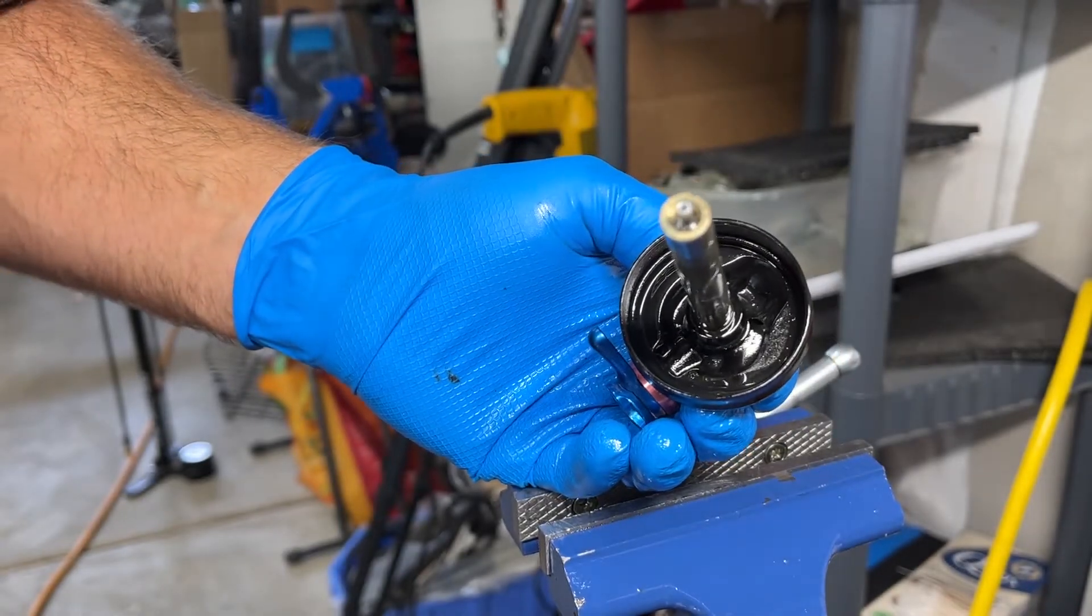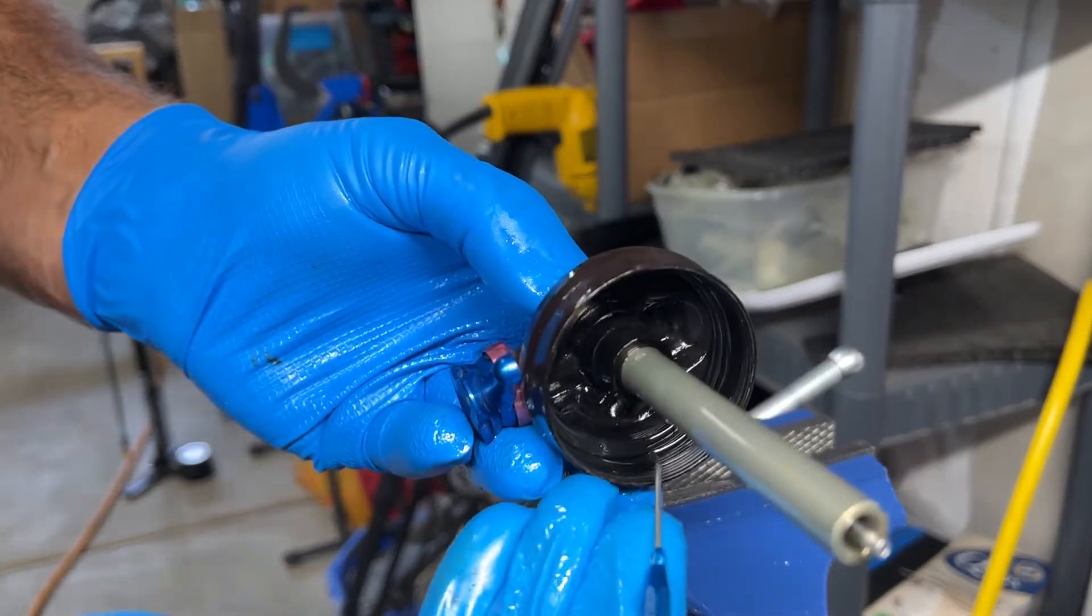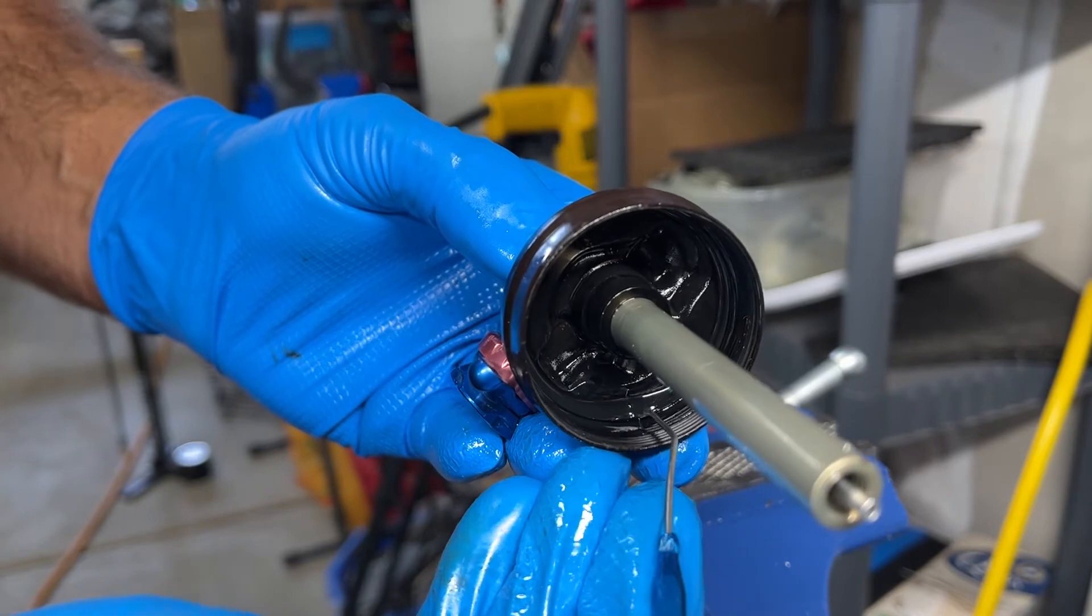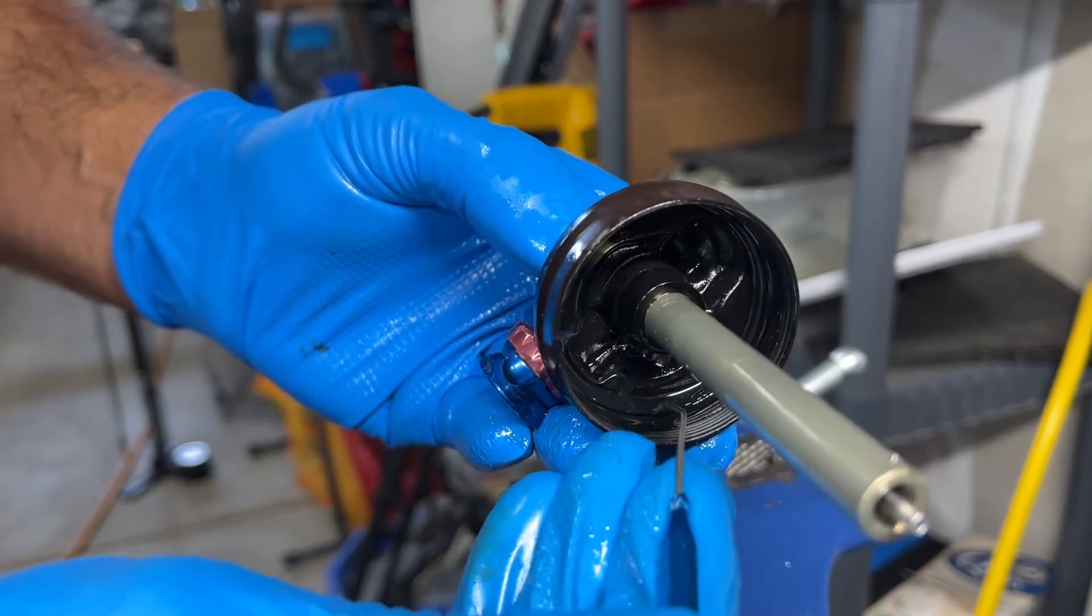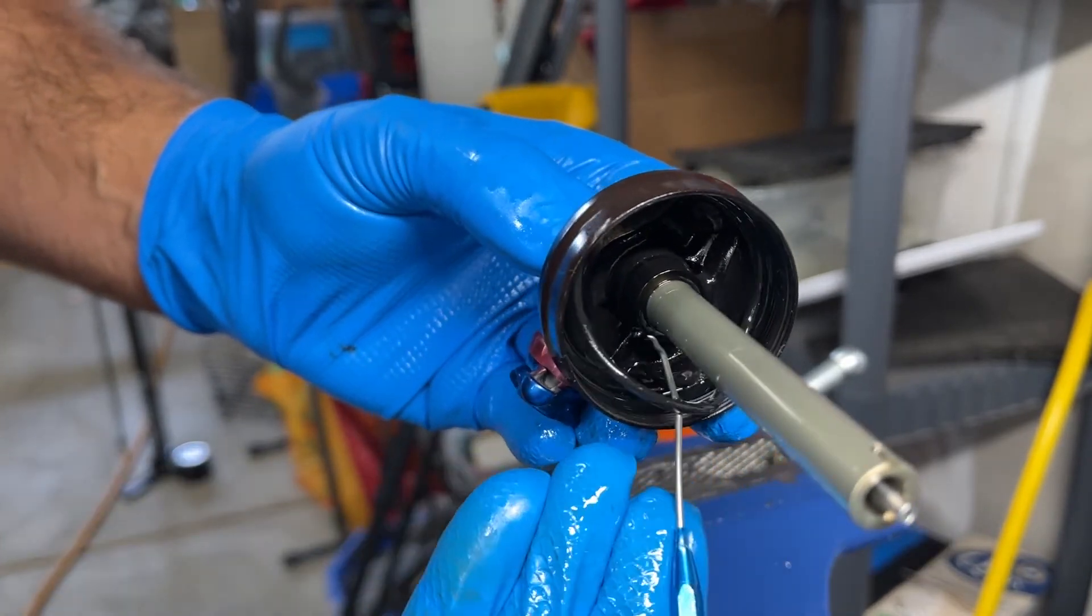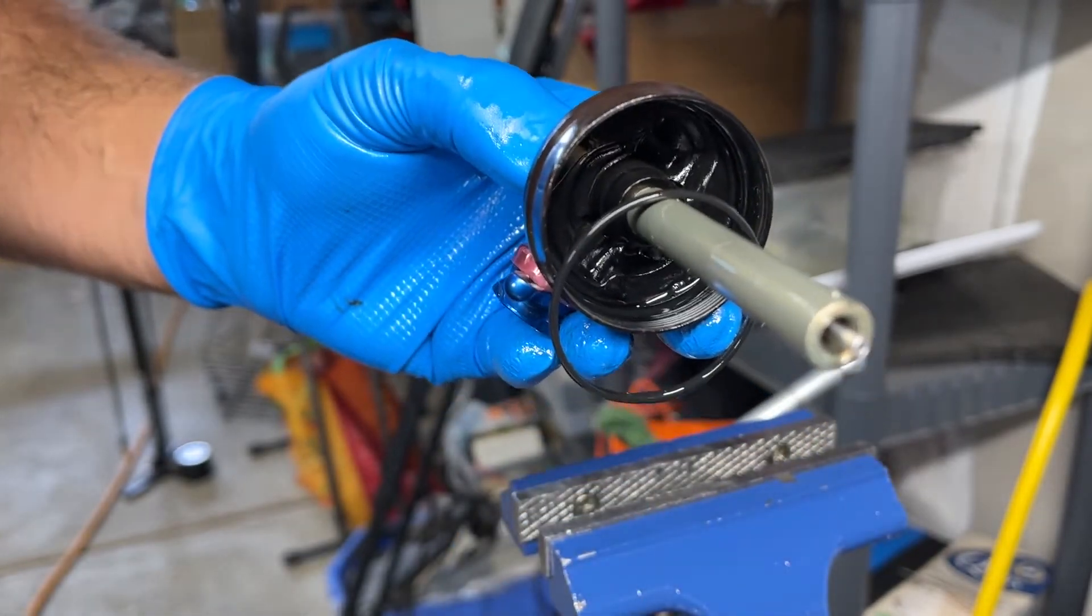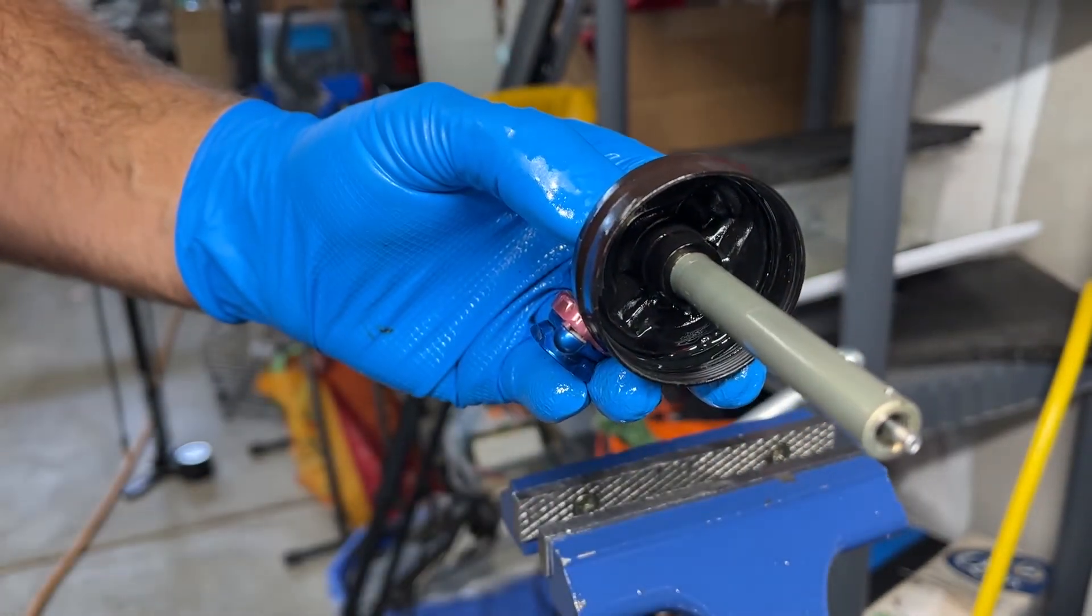Before we take the eyelet off the shaft here, I always like to remove as much as I can in the form of rubber. There is a seal here, and that is just the main air seal that gets replaced typically during a normal service.